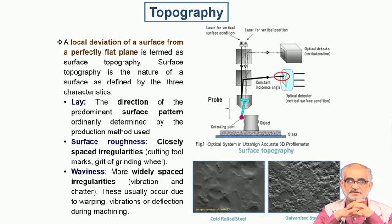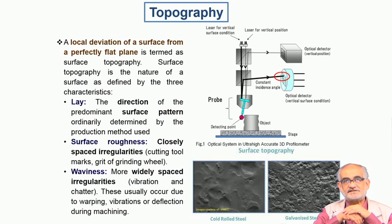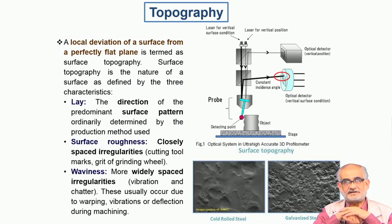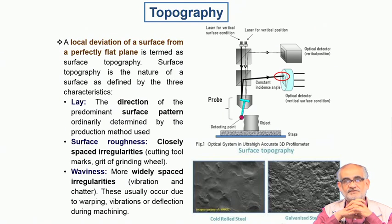The surface that we generally refer to as a very smooth and flat surface, if you bring it under just a simple magnifying glass or maybe a microscope, would definitely reveal certain levels of asperities.